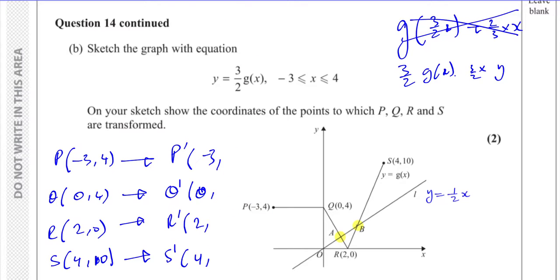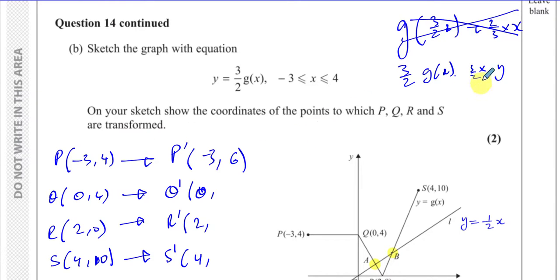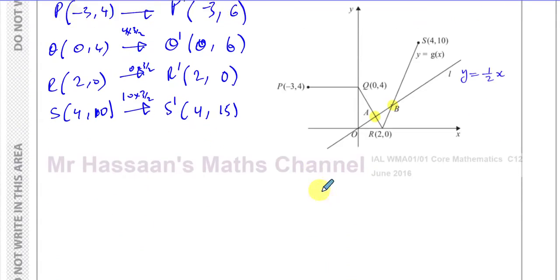The y-coordinates are each multiplied by 3/2. For P: 4 × (3/2) = 6. For Q: 4 × (3/2) = 6. For R: 0 × (3/2) = 0 (unchanged). For S: 10 × (3/2) = 15. So the new coordinates are P'(-3, 6), Q'(0, 6), R'(2, 0), and S'(4, 15).